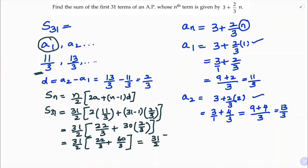So we have 31 by 2 into the bracket. The denominator LCM is the same here, so 22 plus 60 gives 82 by 3. So 31 by 2 into 82 by 3. You can cancel 82 and 2: 2 times 1 and 2 times 41. So you get 31 into 41 by 3.